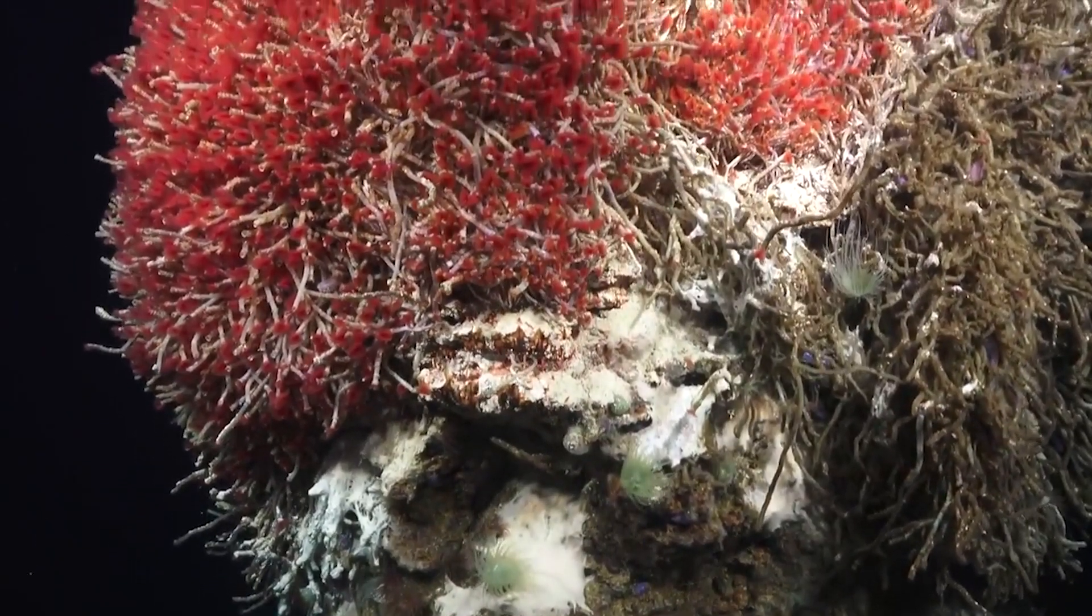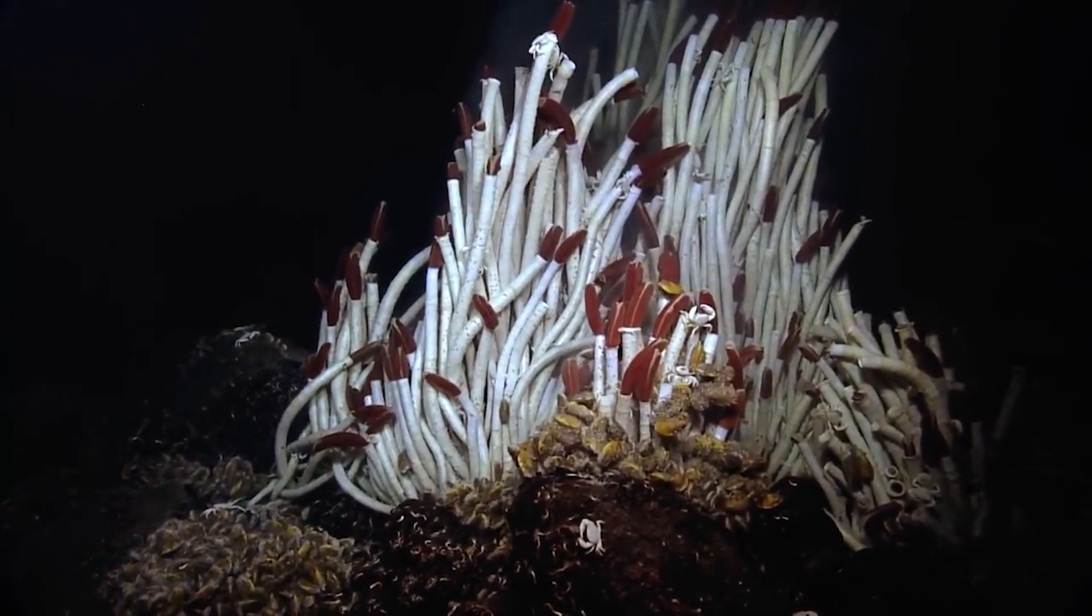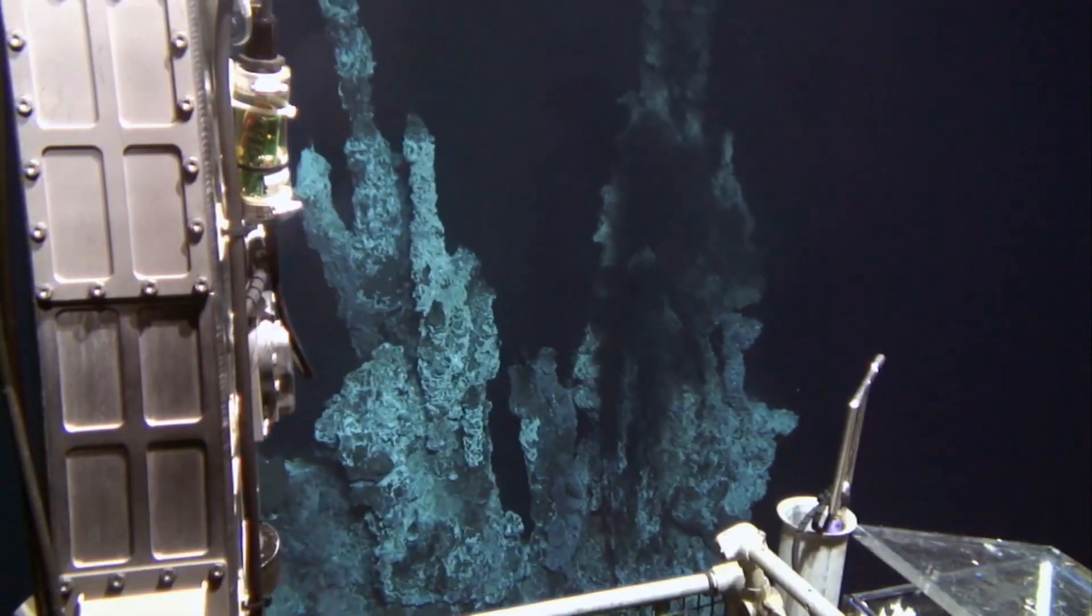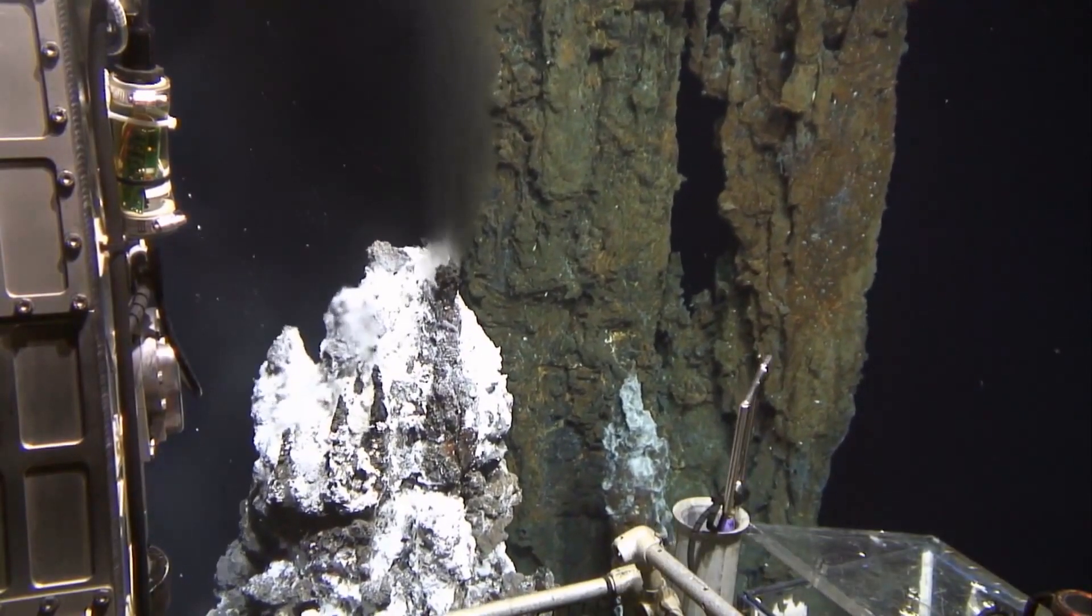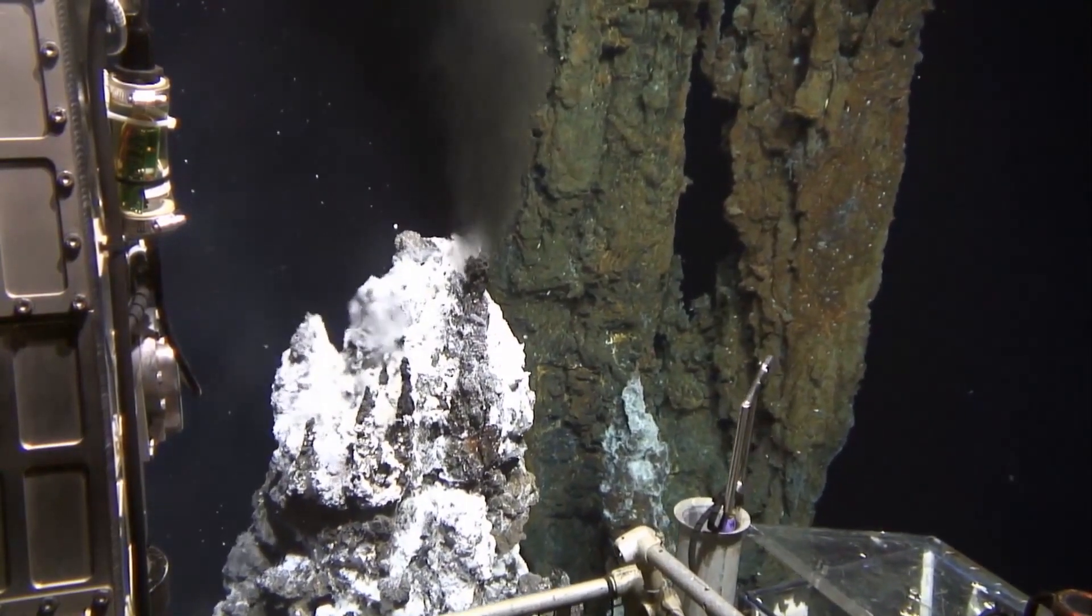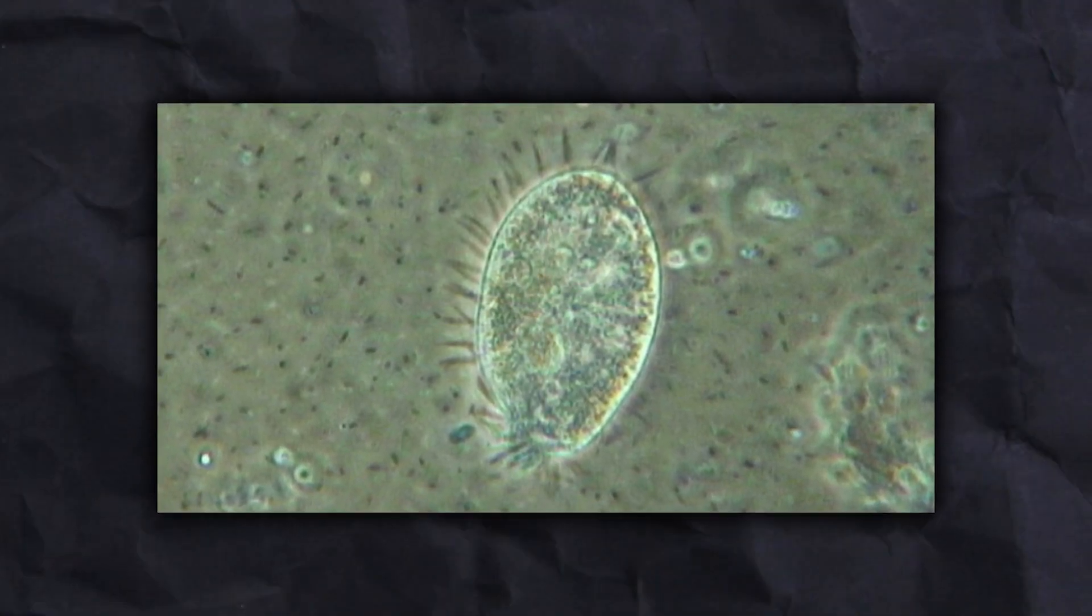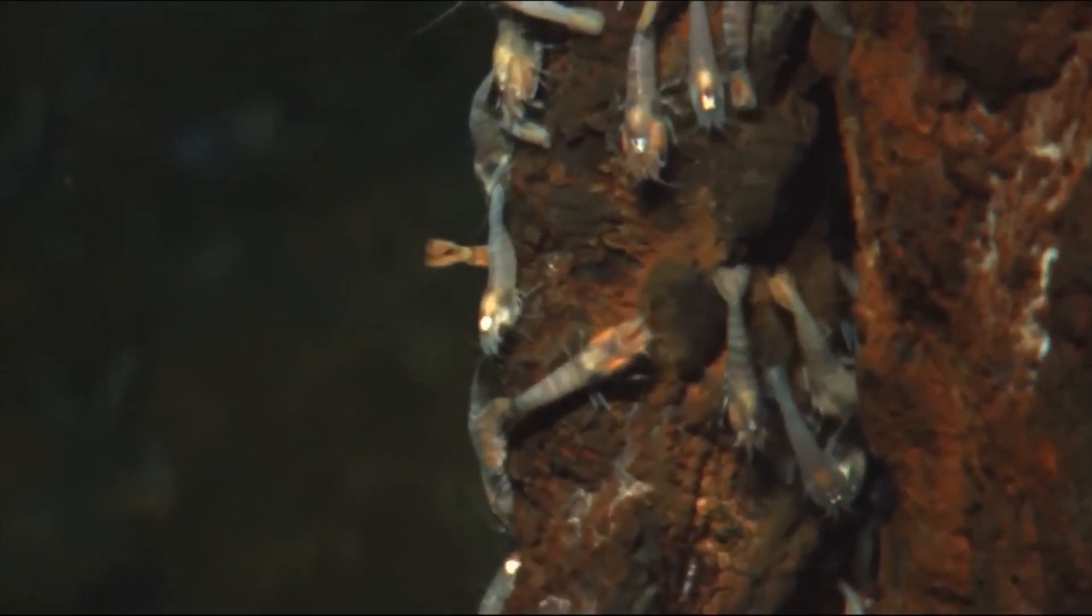All chemosynthetic organisms use the energy provided through chemical reactions, although different species employ various pathways. For instance, at hydrothermal vents, bacteria oxidize hydrogen sulfide, combine it with carbon dioxide and oxygen, and then generate water, sugar, and sulfur. By oxidizing methane or reducing sulfide, other bacteria produce organic materials.